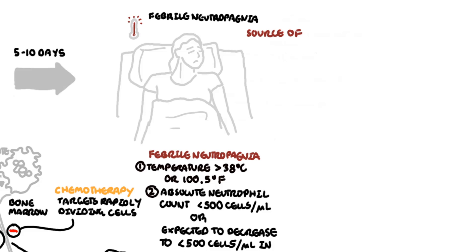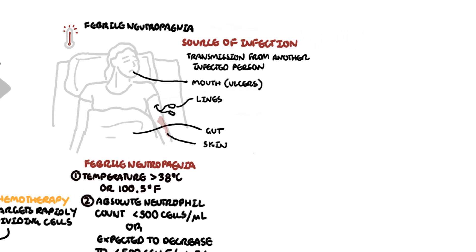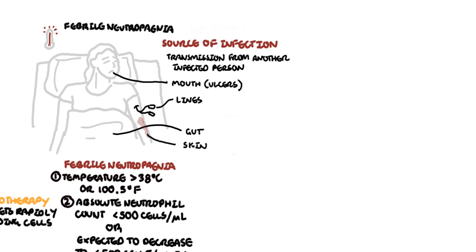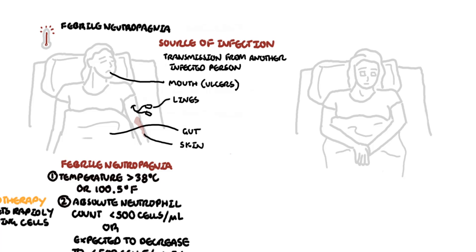The source of infection can result from transmission of infectious agents between people, or from organisms that live in the mouth, the gut, lines used to receive chemotherapy, or even microorganisms from the skin. Normally these infections can be contained, however without neutrophils — with a low neutrophil count — this initial defense mechanism fails.